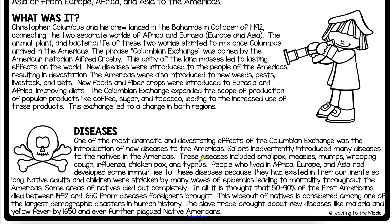All of these diseases were brought to the Americas from people from Europe, Africa, and Asia. But the text says people who lived in Africa, Europe, and Asia had developed some immunities to these diseases because they had existed in their continents so long — meaning their bodies had learned how to fight off these diseases. Think of it like how now, if you get a cold, you might be sick for a little while, but your body has learned to fight it off because colds are pretty common.